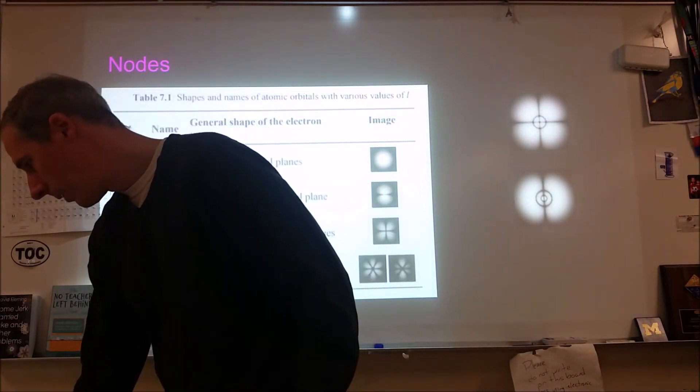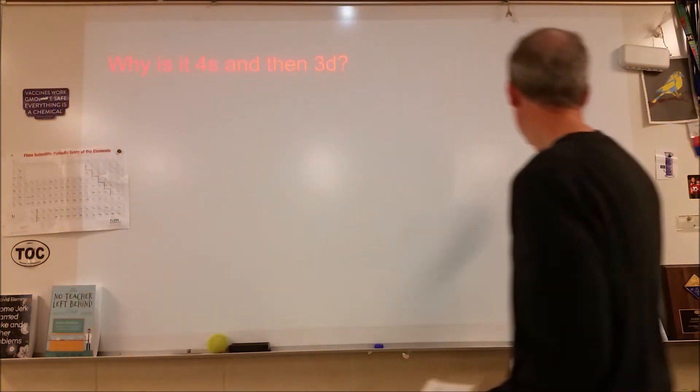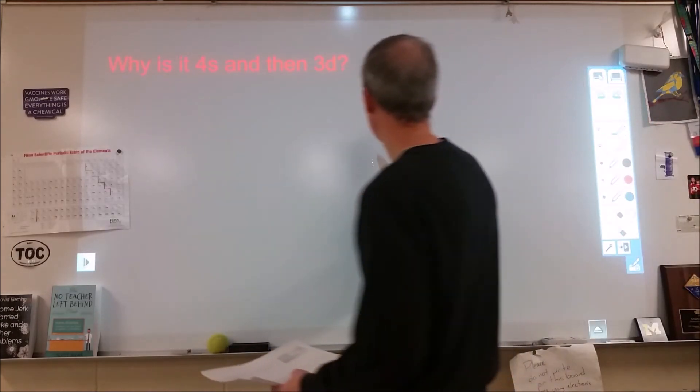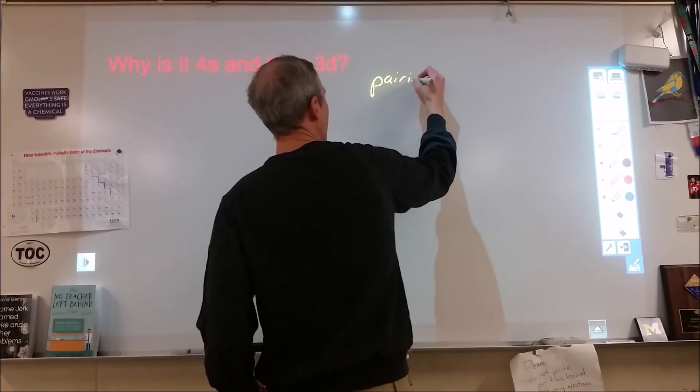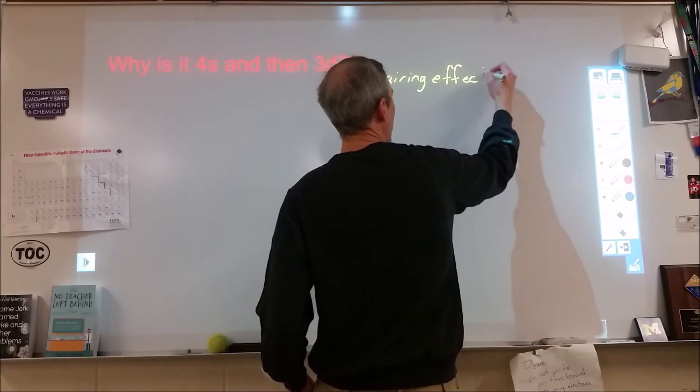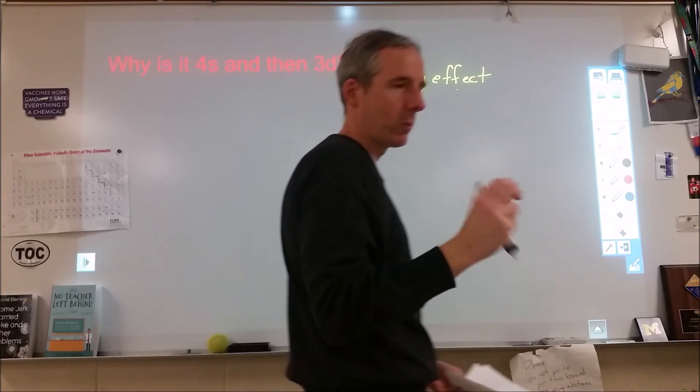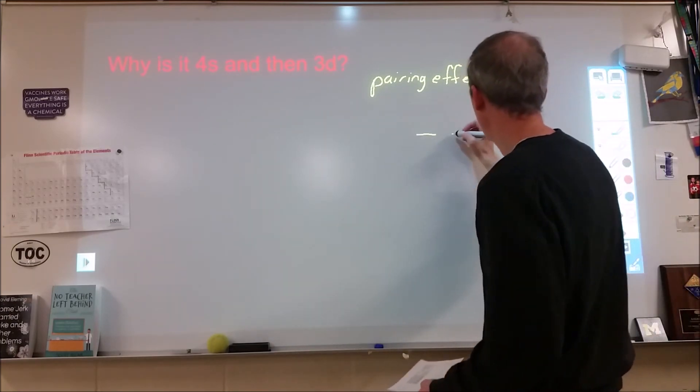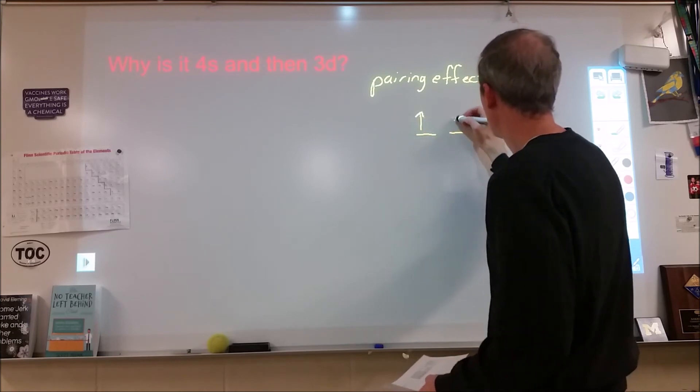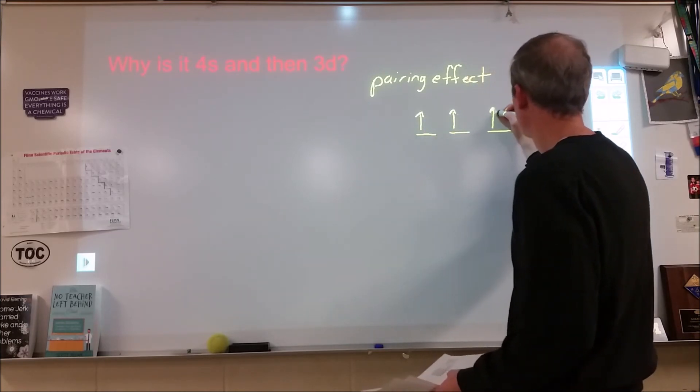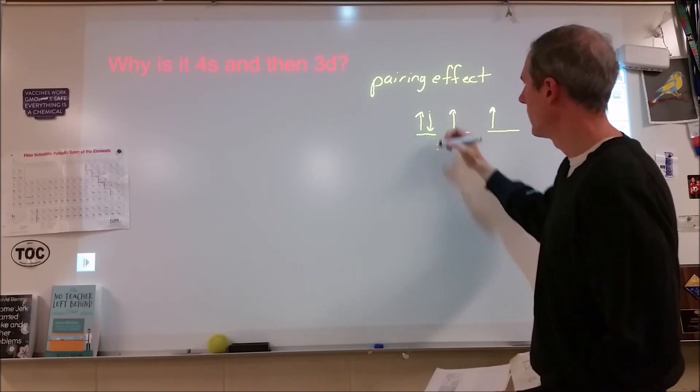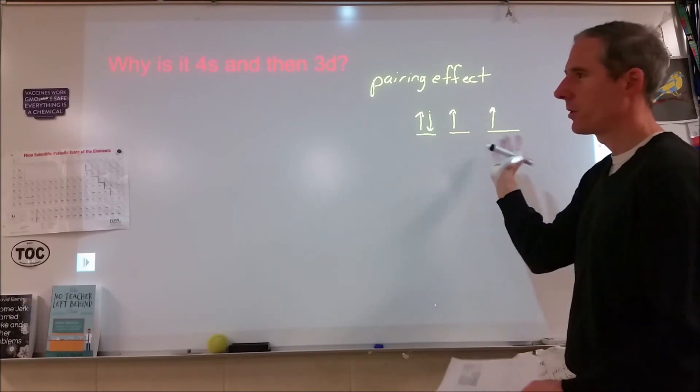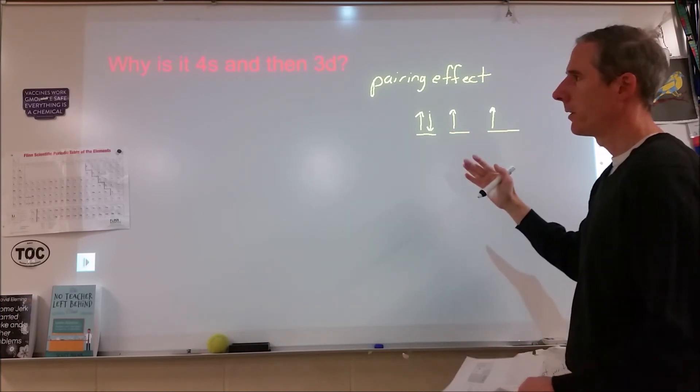So the other thing that's going to be relevant here, besides all the nodes and repulsion stuff, is that there's also something called a pairing effect. It's said to be quantum in nature, which basically means that the rules of how electrons move cause this to be a unique type of thing. But when we're pairing electrons, there is an extra repulsion when we put electrons together within the same orbital state.